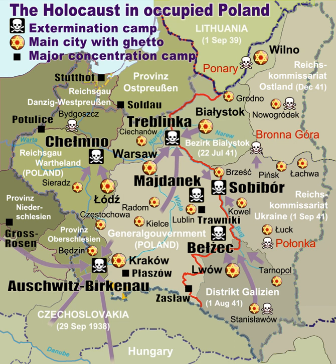Extermination camps were also set up by the fascist Ustasha regime of the Independent State of Croatia, a puppet state of Germany, which carried out genocide between 1941 and 1945 against Serbs, Jews, Roma, and its Croat and Bosniak Muslim political opponents.